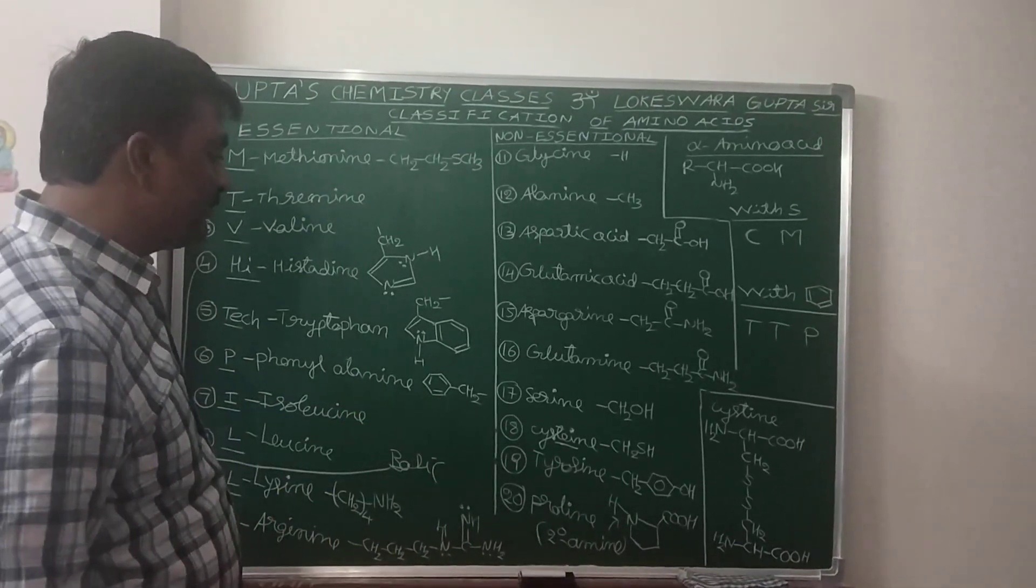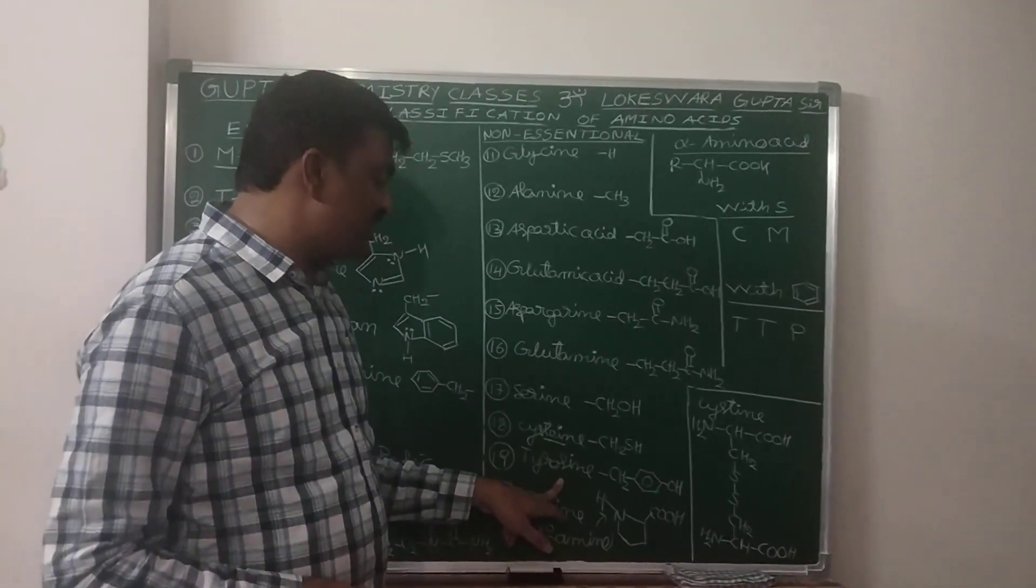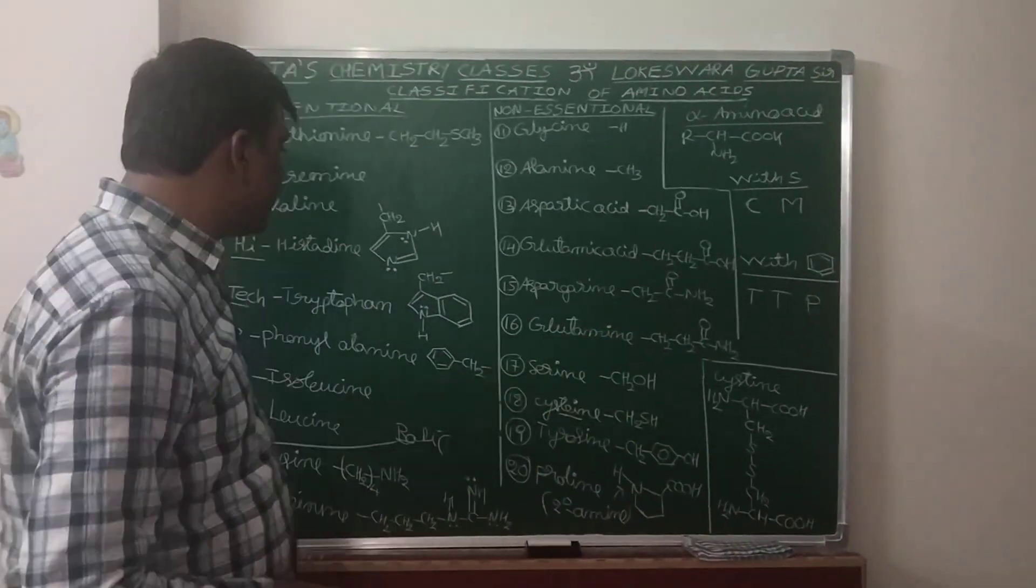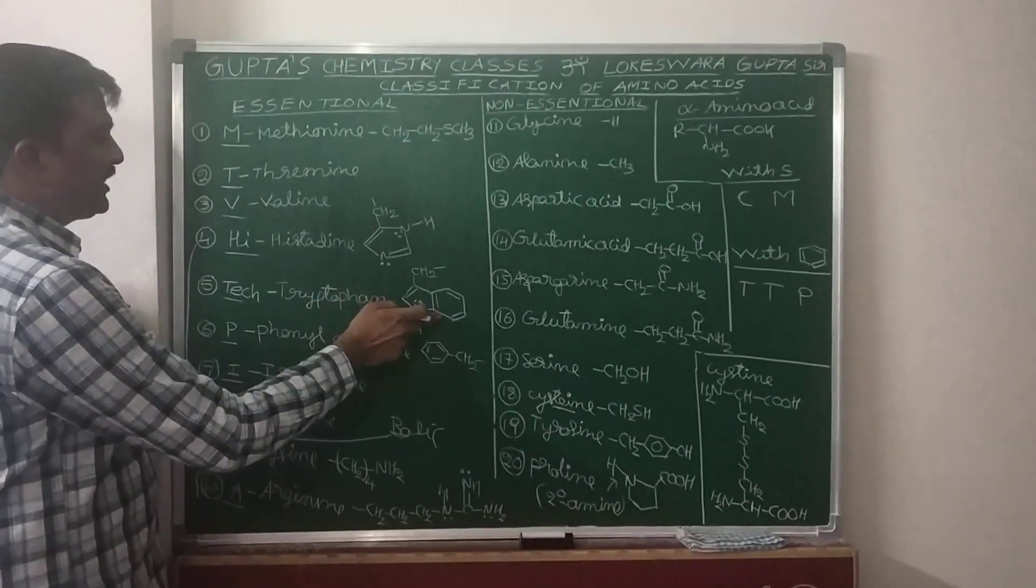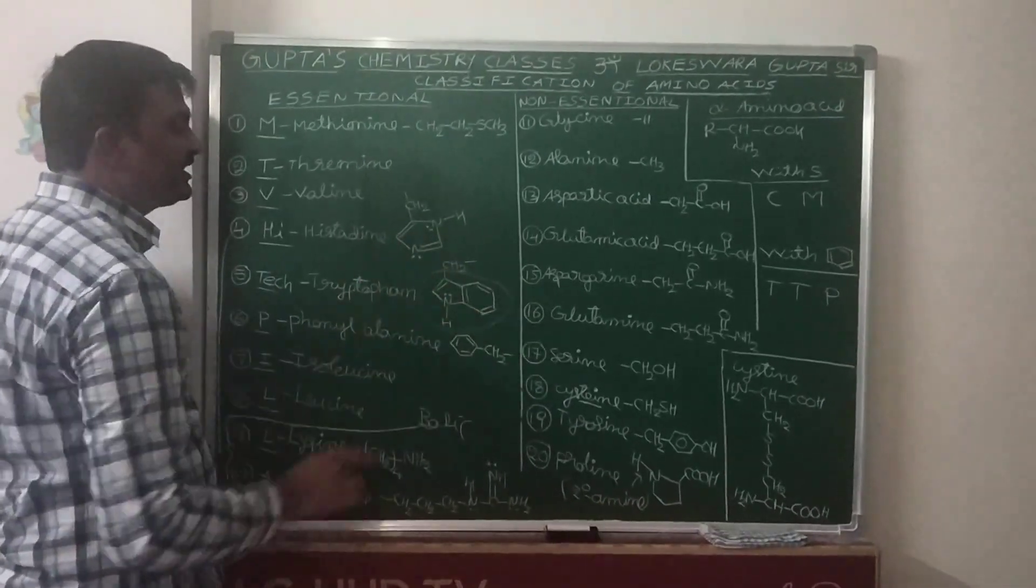T - Tyrosine, parahydroxybenzyl. And another T - Tryptophan. See, it is indole group. In this benzene ring is there.